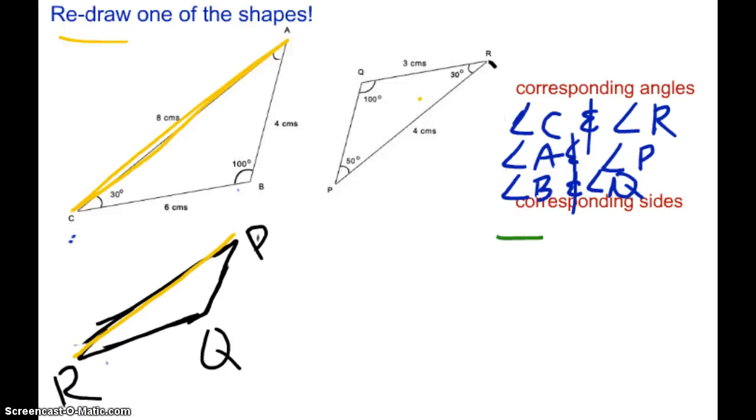So the way we note this is line segment AC. This little symbol means line segment. And segment PR. I could also call it RP. So again, that was AC, and PR. Those are corresponding.